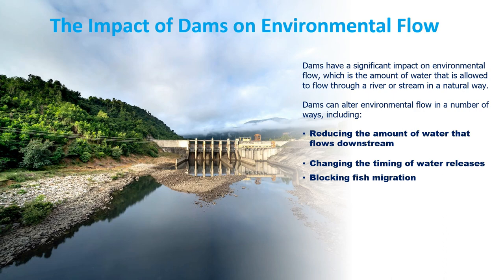Dams can also change the timing of water release — releasing water at different times of the year than would naturally occur — which can disrupt the natural flow regime and have a negative impact on river ecosystems. Lastly, dams can block fish migration, preventing fish from accessing spawning grounds and other important habitats, which can have a significant impact on fish populations.